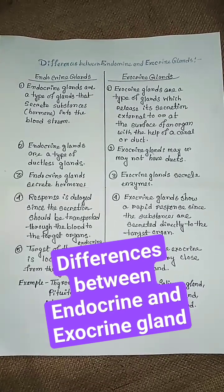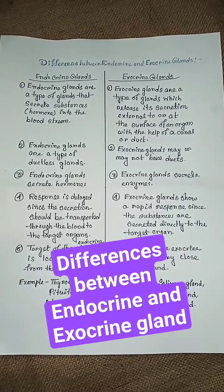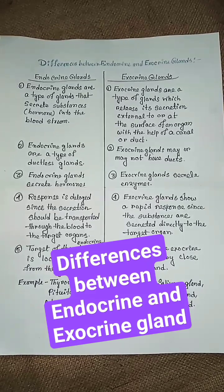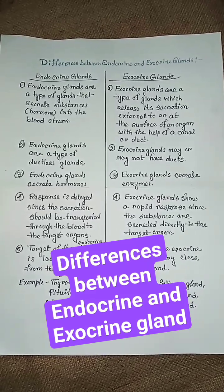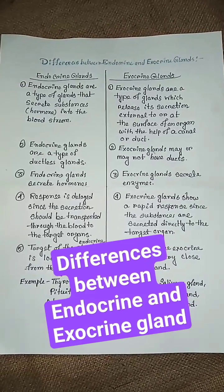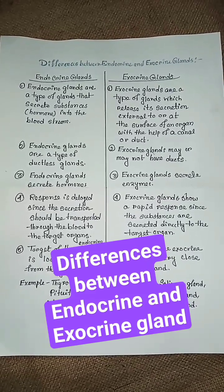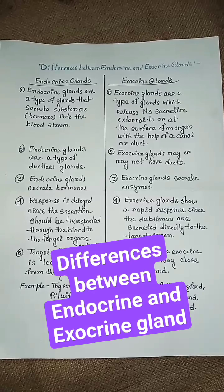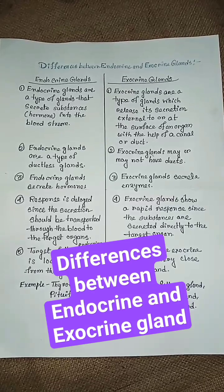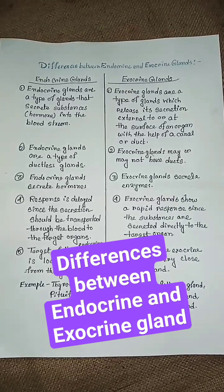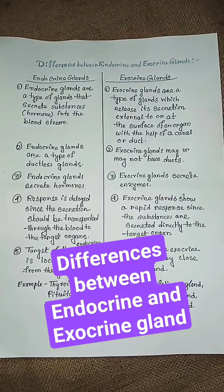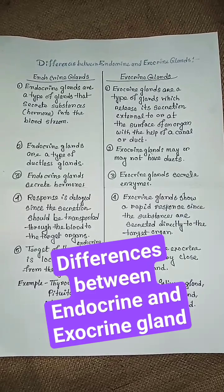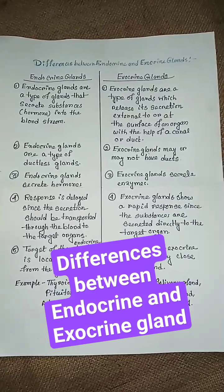Endocrine glands secrete hormones, while exocrine glands secrete enzymes. The response of endocrine glands is delayed since the secretion must be transported through the blood to the target organs.